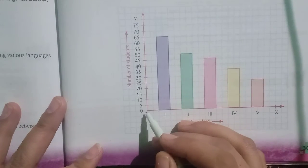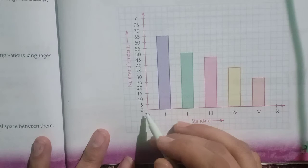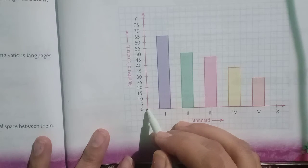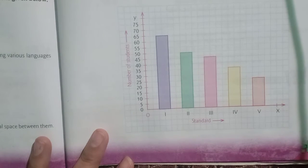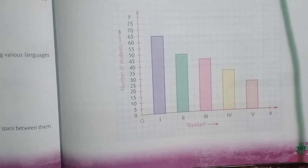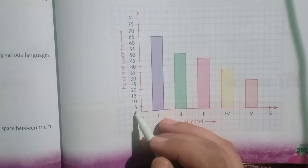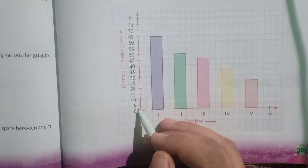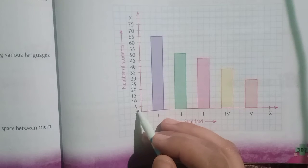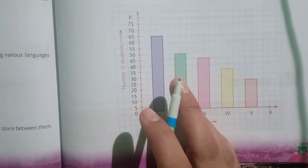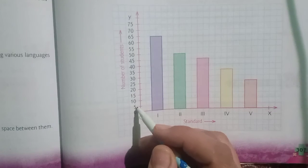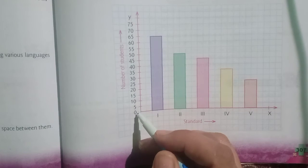The distance from zero to five will be equal to five students. So this space, that is one centimeter, will be representing five students. Zero to five is five students, five to ten is another five students.